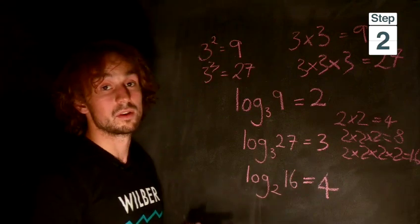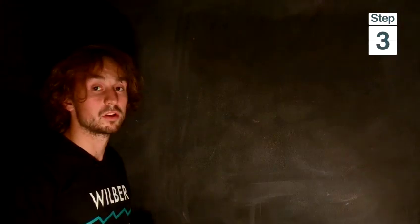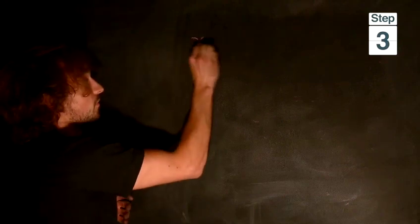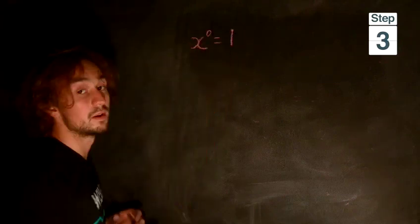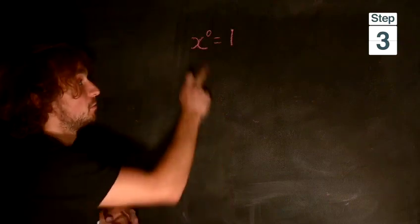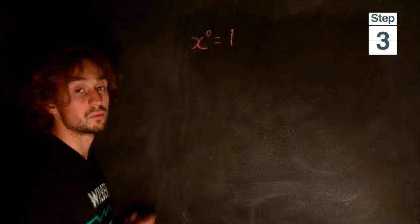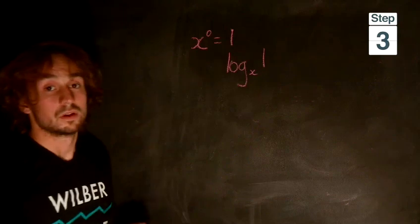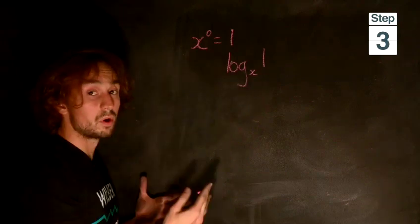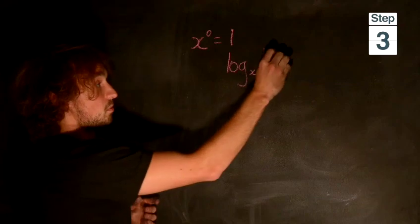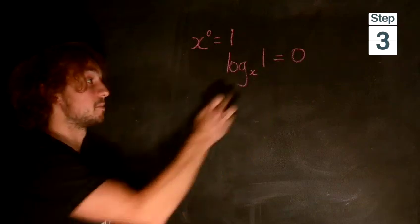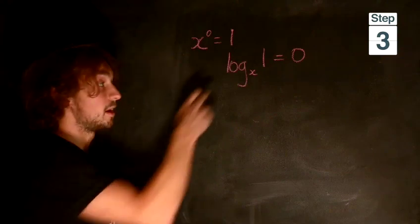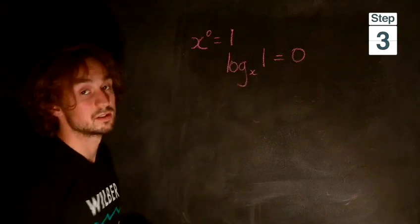And that's the basics of logarithms. Now, some identities you need to know. We know for sure that x to the power of 0 is 1, no matter what x is. So what is log base x of 1? This is x to the power of what is equal to 1. The answer has to be 0, because x to the power of 0 is equal to 1.